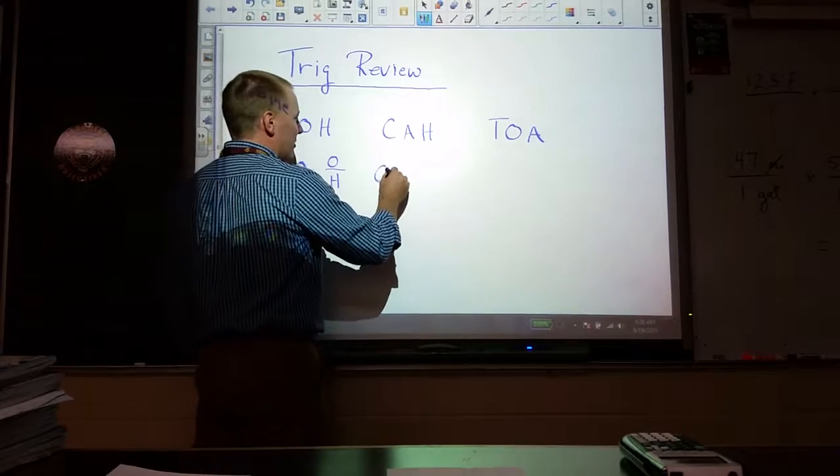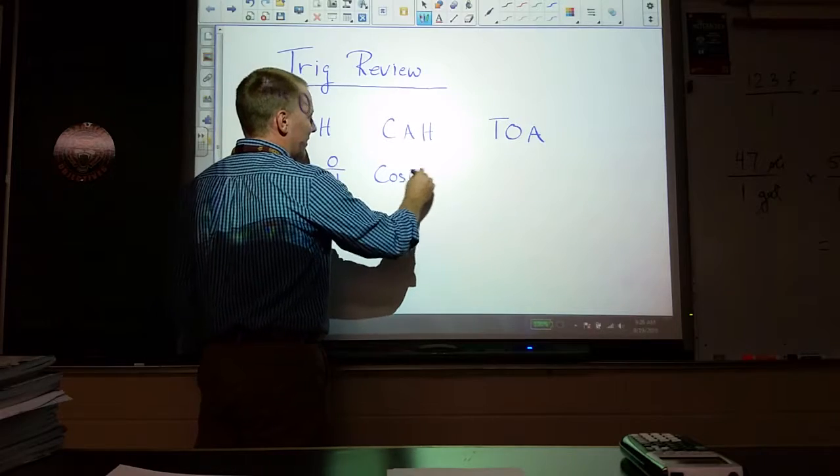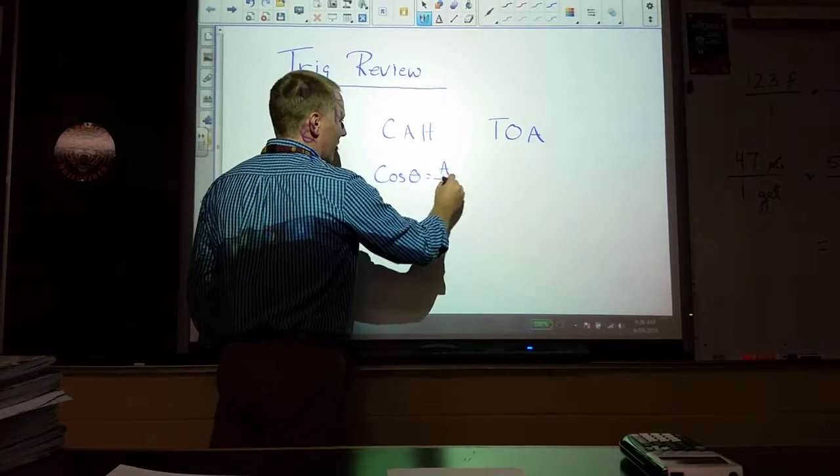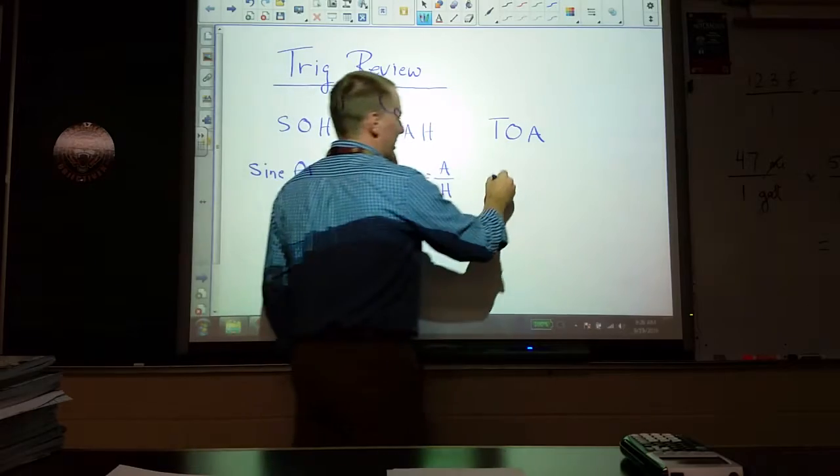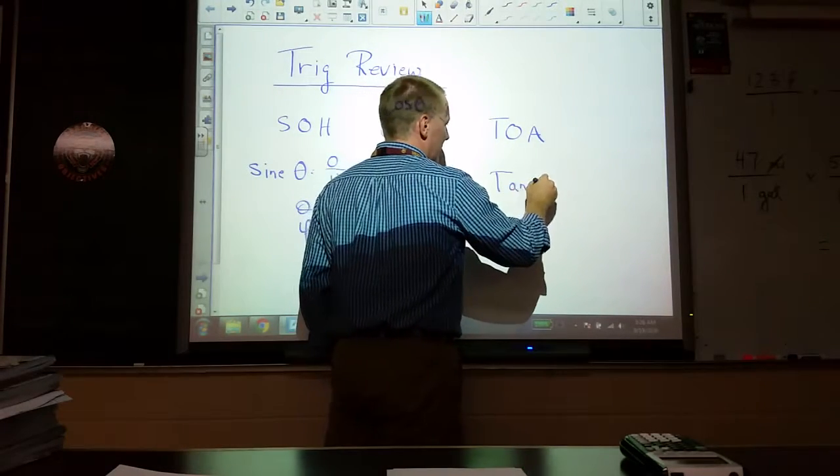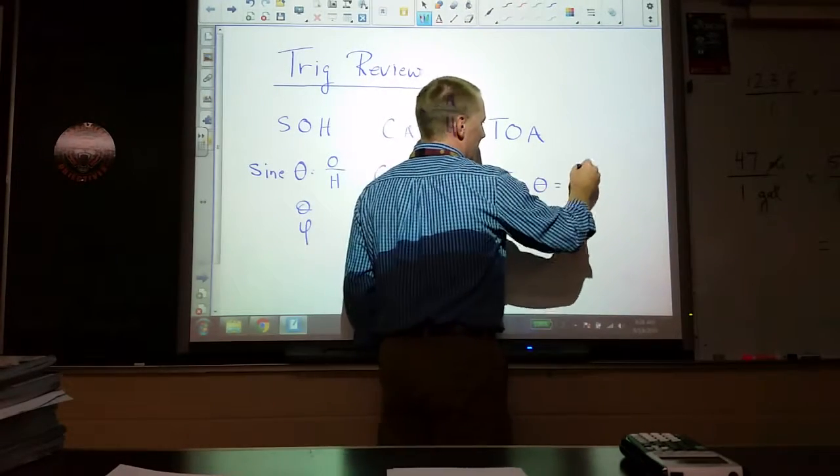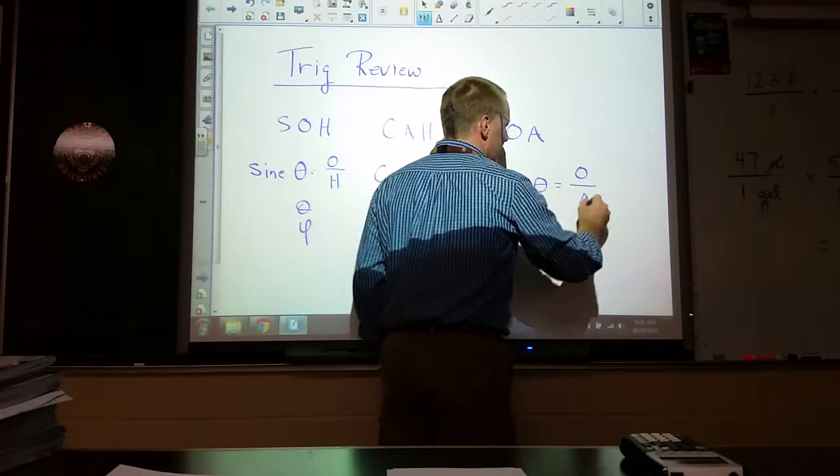Cosine of theta equals adjacent over hypotenuse. And tangent of theta equals opposite over adjacent. Now let's talk about what each of those means in relation to each other.